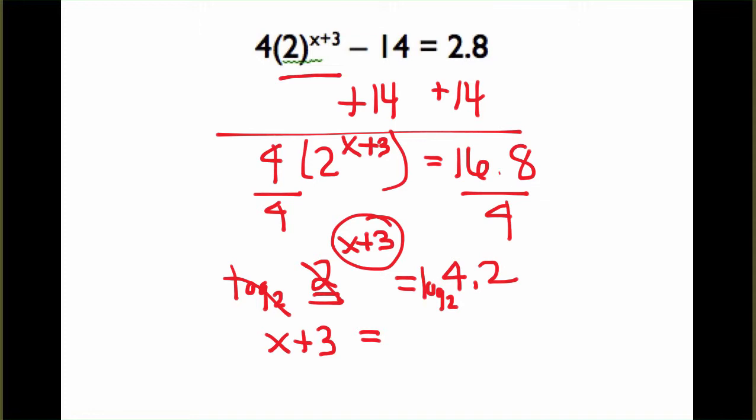And then on the right, log base 2 of 4.2, we can evaluate using our change of base theorem. So, we end up with x plus 3 is equal to 2.07.